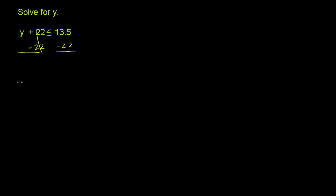The left-hand side, these guys cancel out. That was the whole point, so you're just left with the absolute value of y as being less than or equal to. And then 13.5 minus 22. Let me do it over here. 13.5 minus 22.